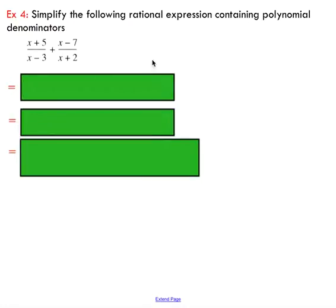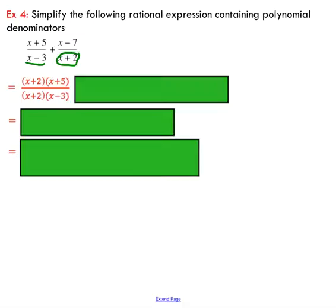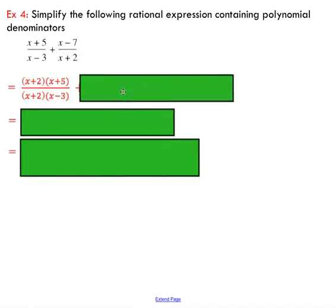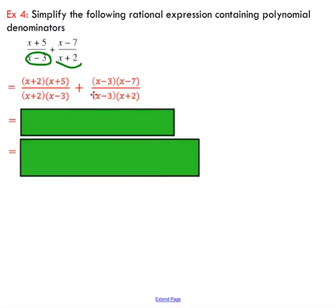One more example — probably the trickiest in this video. Instead of monomials or numerical denominators, I've got a binomial in each denominator: x minus 3 and x plus 2. To find a common denominator, I take x minus 3 and multiply it by x plus 2. So I multiply the first expression's top and bottom by x plus 2, and multiply the second expression's bottom by x minus 3 — the denominator of the first expression. This gives a common denominator for both.